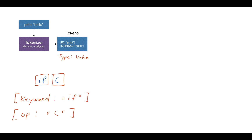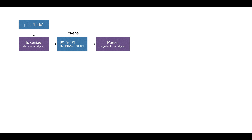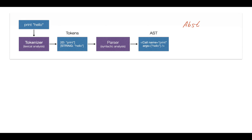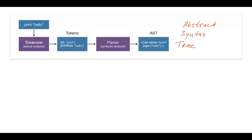The module which actually validates whether our program is syntactically valid is known as the parser, or syntactic analysis. In theory, the purpose of the parser is validation. But in practice, the parser produces the next intermediate representation known as the abstract syntax tree, or AST for short. As you can see, we have a call expression with the function name 'print' and a single argument, the word 'hello'.